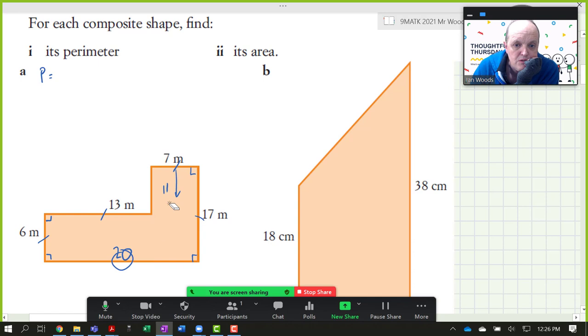So having got those parts, what we can do is add our values together. So we've got a perimeter is going to be, starting from one side and working the way around, 6 plus 13 plus the 11 we just calculated, plus 7 plus 17 plus the 20, which we just calculated. So our total perimeter is going to be 74 metres.